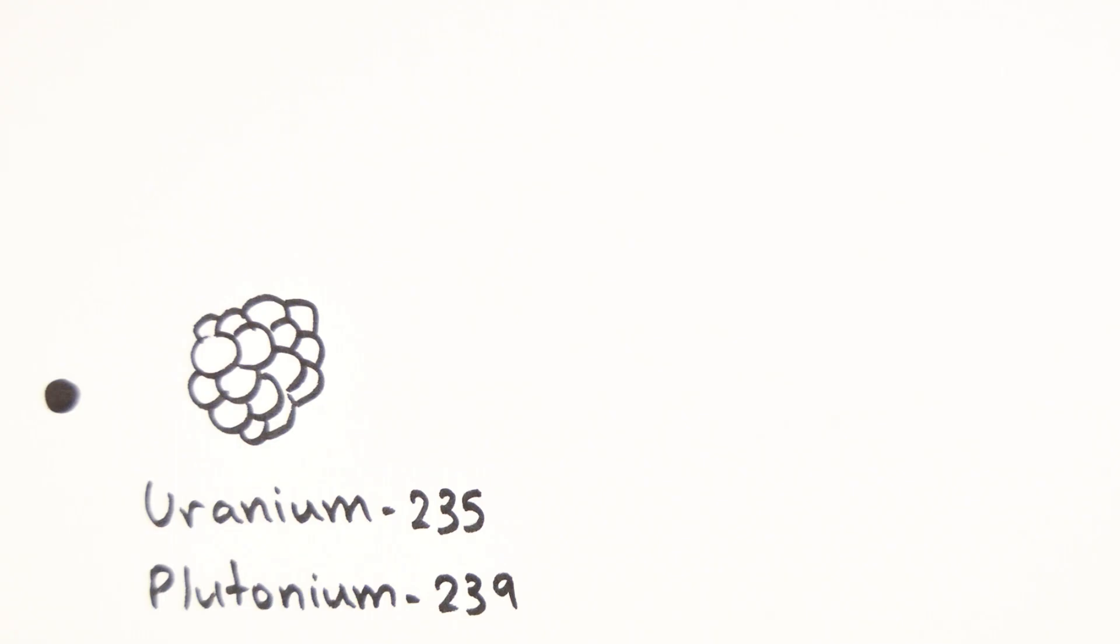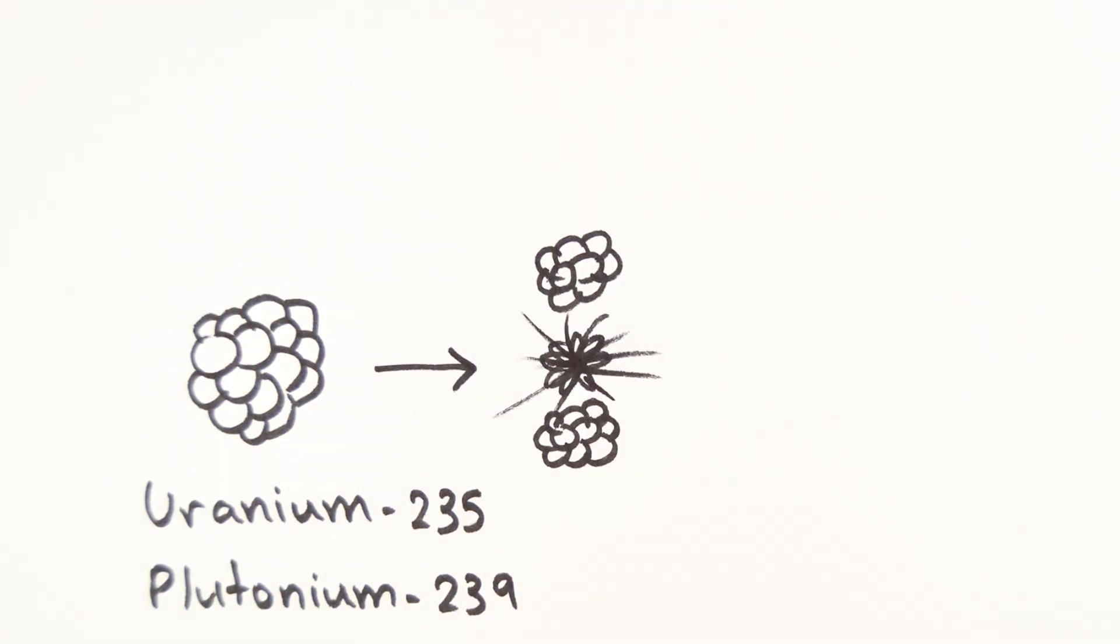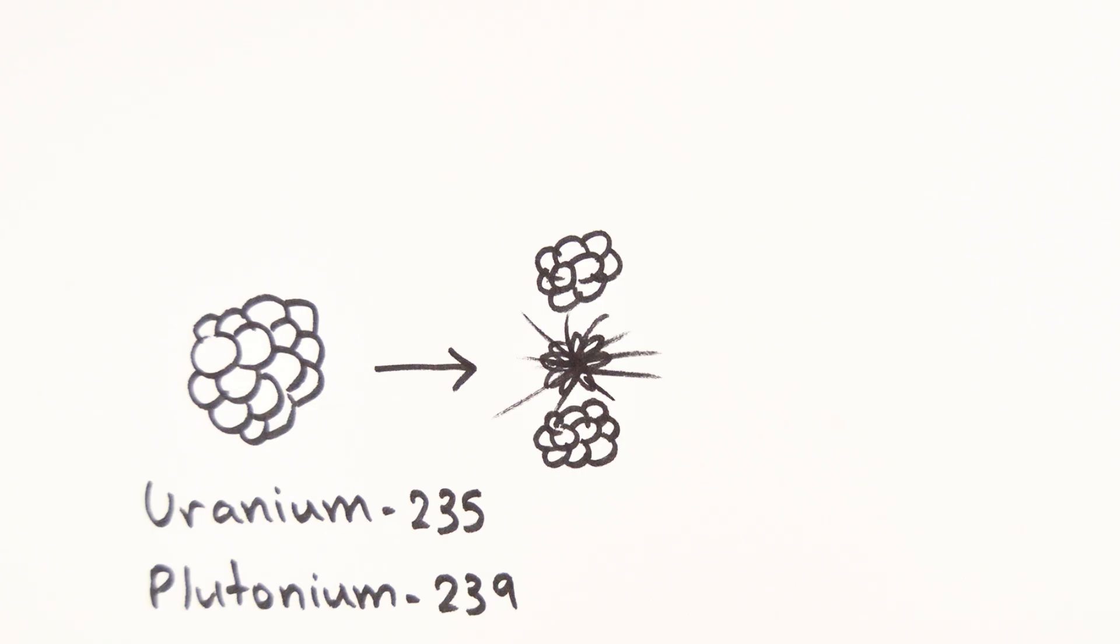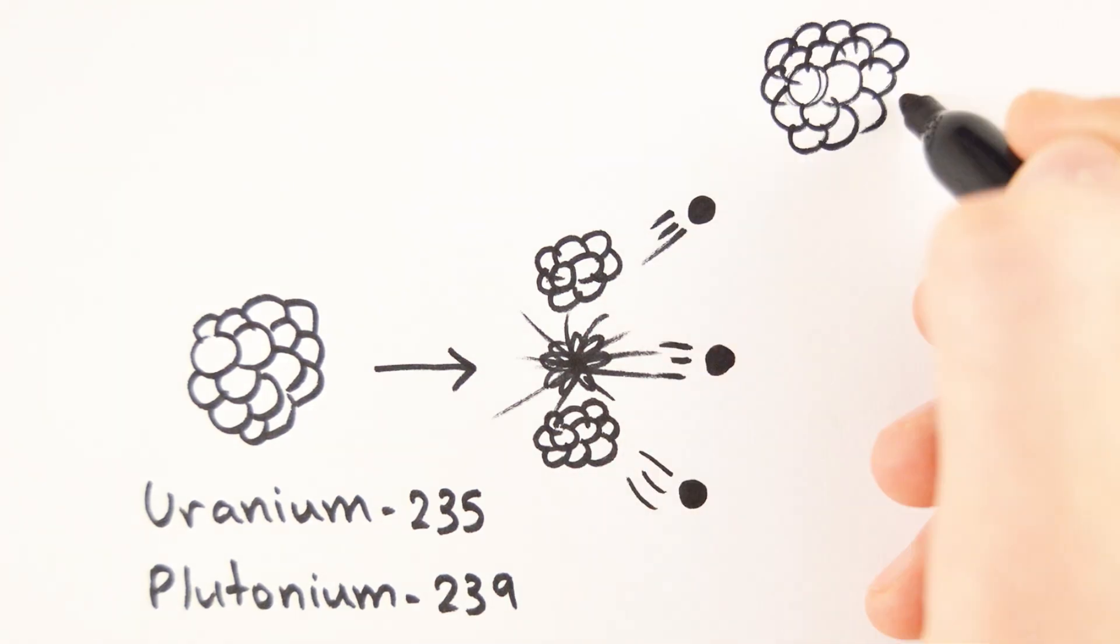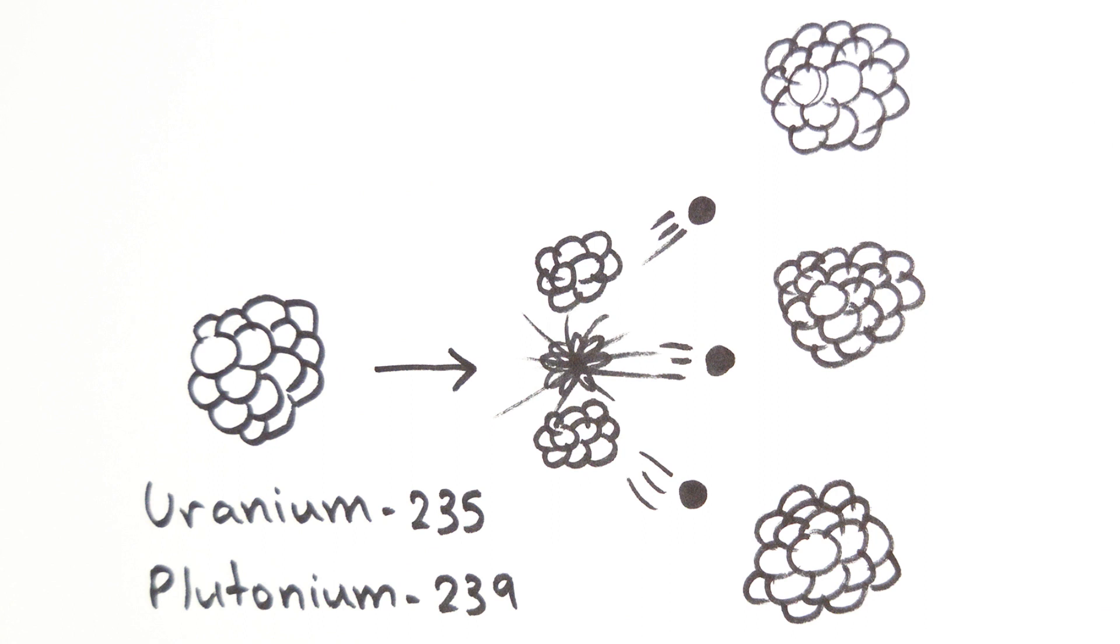To start off the process, one of these isotopes must absorb a neutron. When this happens, the nucleus becomes unstable and splits into two smaller nuclei. Two or three neutrons are also released in the process, which can go on to cause a chain reaction.